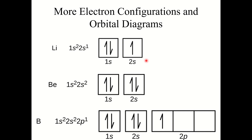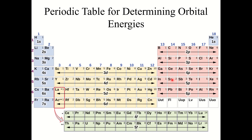Let's look at more electron configurations. Hydrogen is 1s1, helium is 1s2. Lithium (Z=3) has three electrons: 1s2, 2s1. Beryllium (Z=4) is 1s2, 2s2. Boron (Z=5) has five electrons — the fifth goes into a 2p orbital: 1s2, 2s2, 2p1. Finding electron configurations is essentially just counting upward from 1s to 2s to 2p to 3s to 3p to 4s to 3d, and so on. Each element contains its final electron plus all electrons from elements before it.